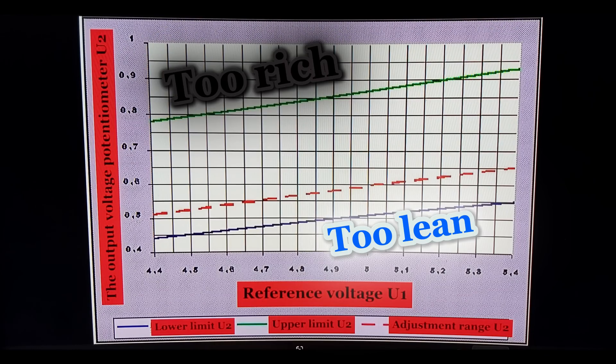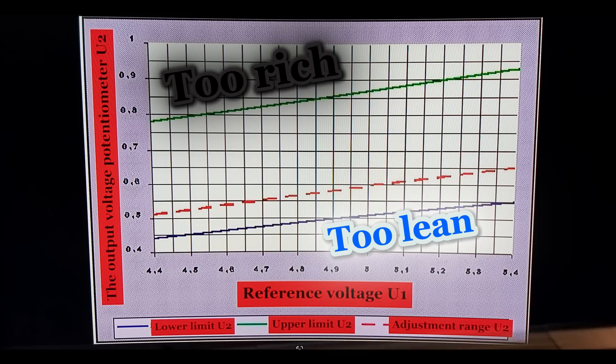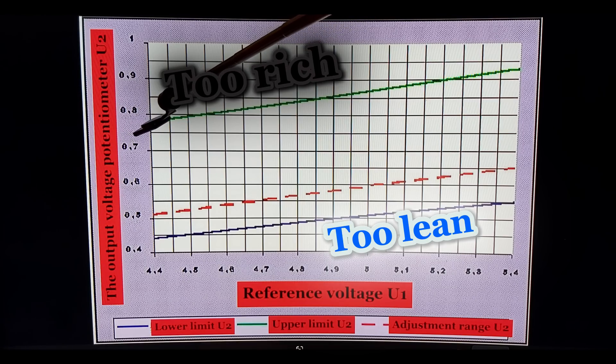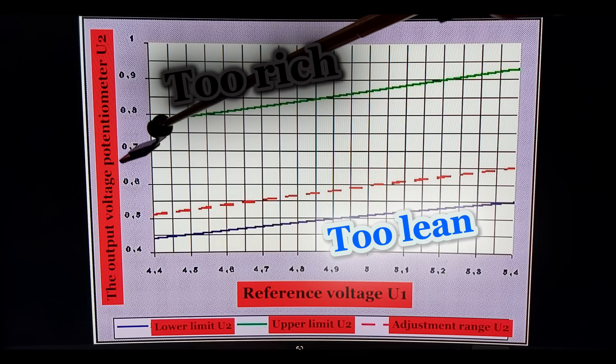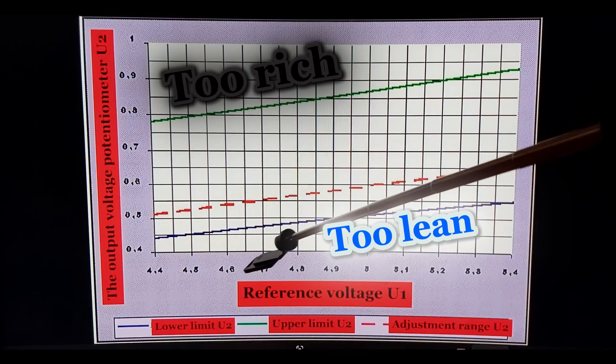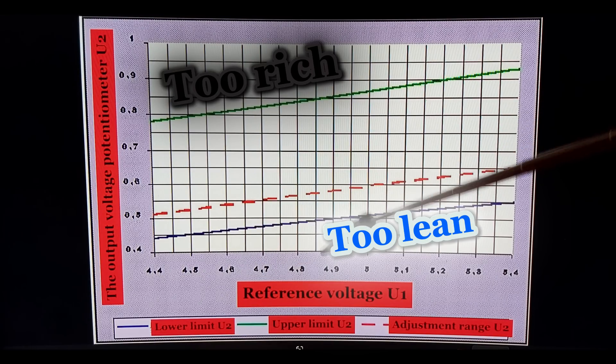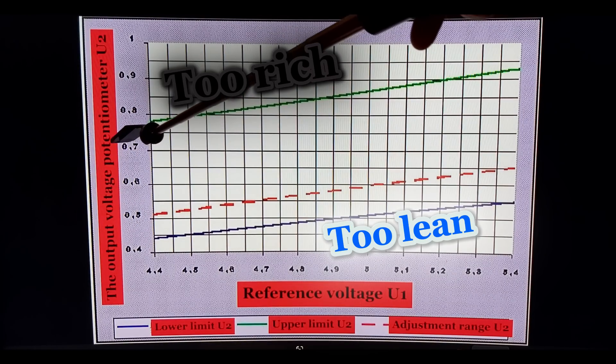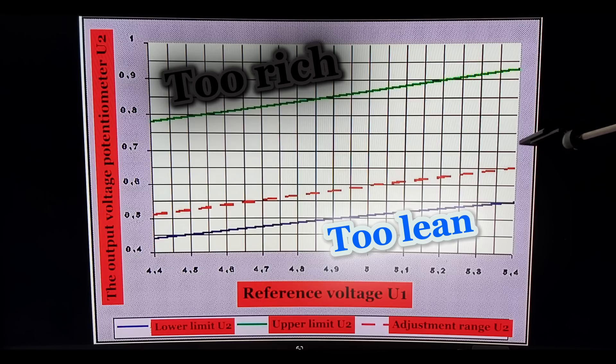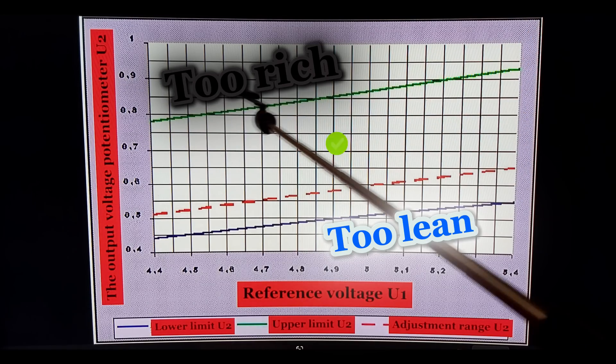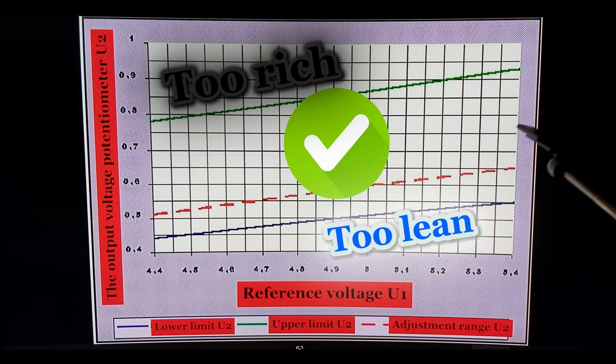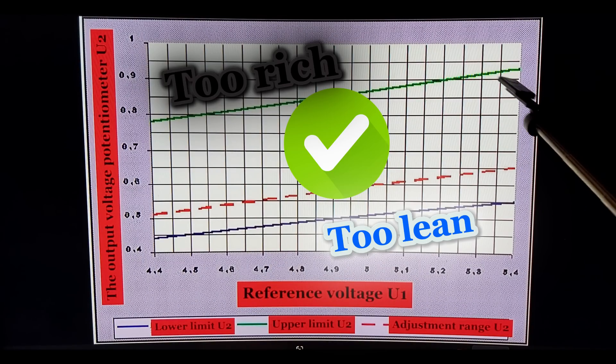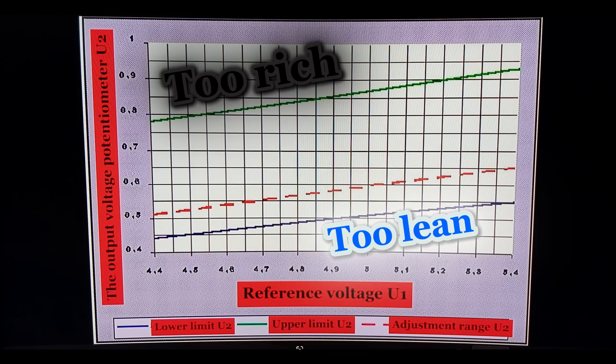Now why am I showing you this? Because I want to show you why the potentiometer has to be adjusted at 0.7 volts. Because whichever reference voltage you take on the potentiometer - let it be 4.7, 8, 9, 5, 5.1, even 5.4 - if you set your potentiometer to be 0.7 volts, look: you're always within the specs and within the range of the adjustment here.